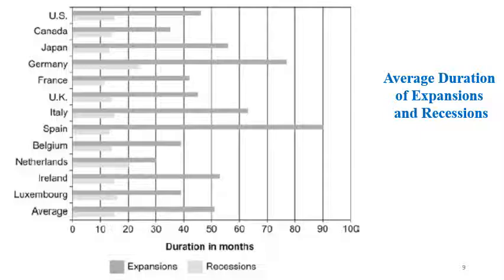For Canada it is 35 months for expansion and 15 for recession. Japan is about 55 months for expansion and about 13 for recession. Germany is 75 months for expansion and 25 for recession. France and the UK are smaller than Germany, but Italy is greater than both.